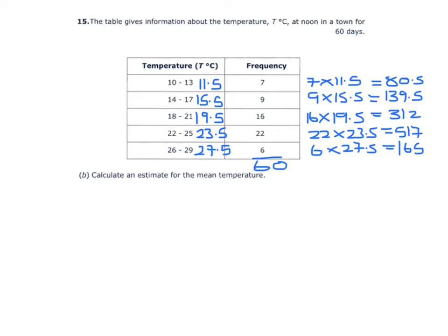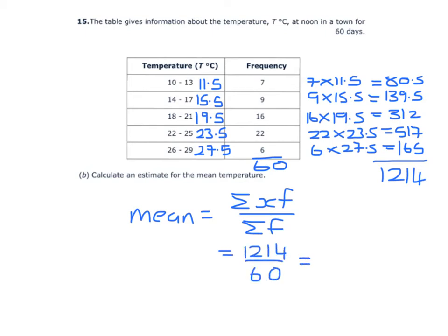Once I've calculated these products, I need to add them together, and I get 1,214. So the mean is the sum of the midpoints times the frequencies, divided by the sum of the frequencies. So that's 1,214 divided by 60, which gives us a mean of 20.23 recurring.